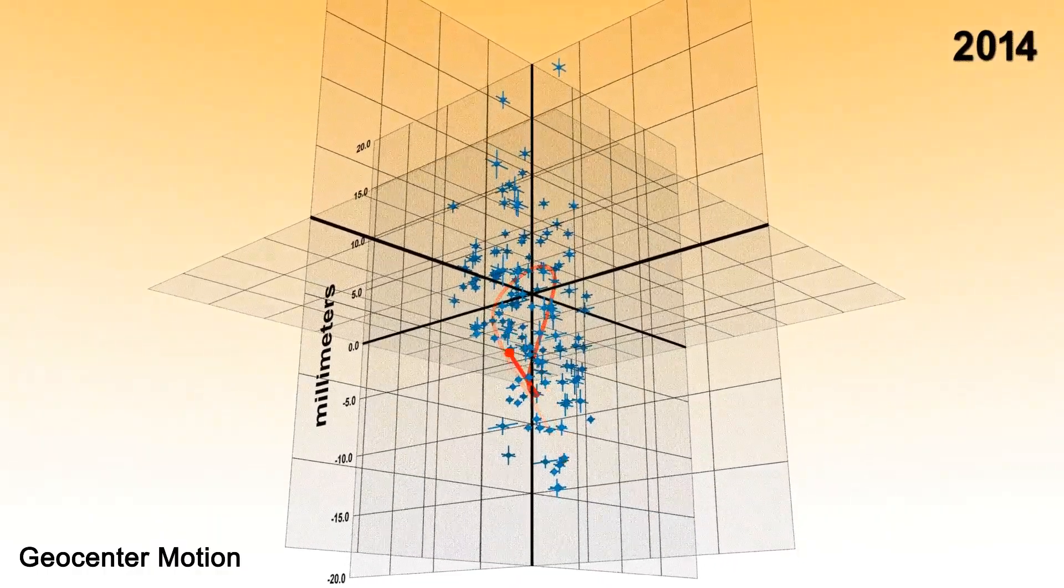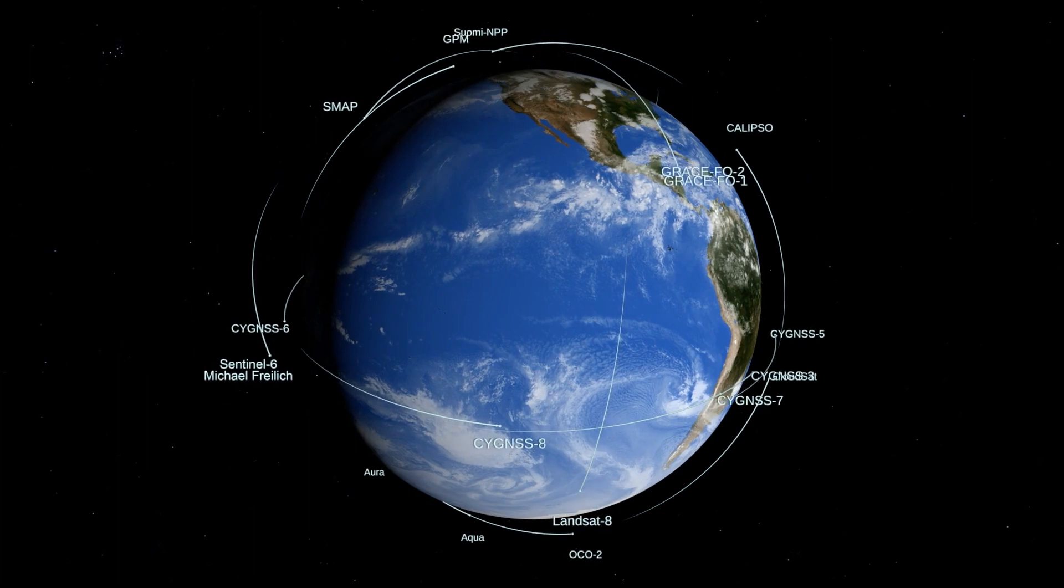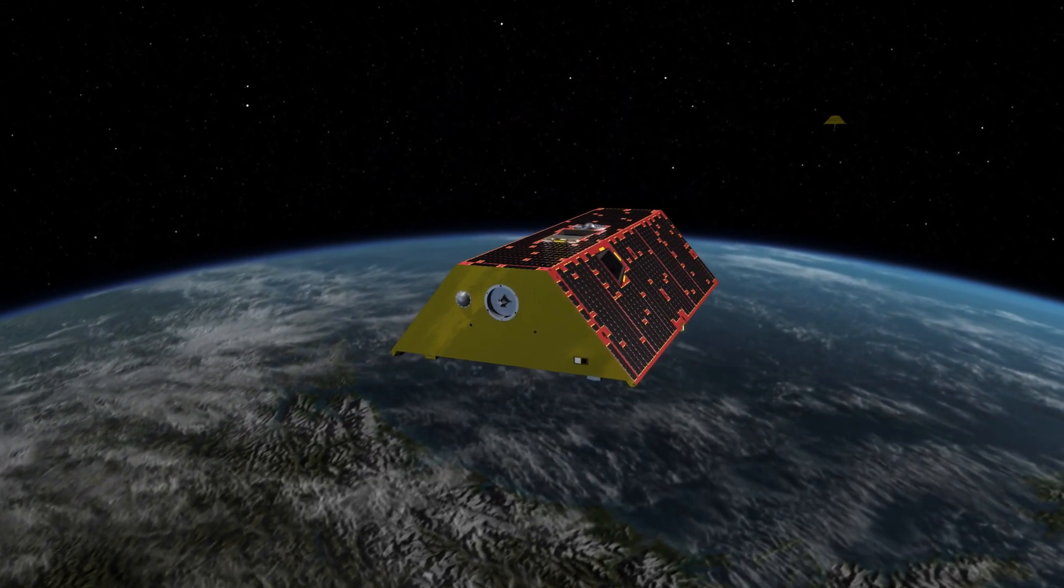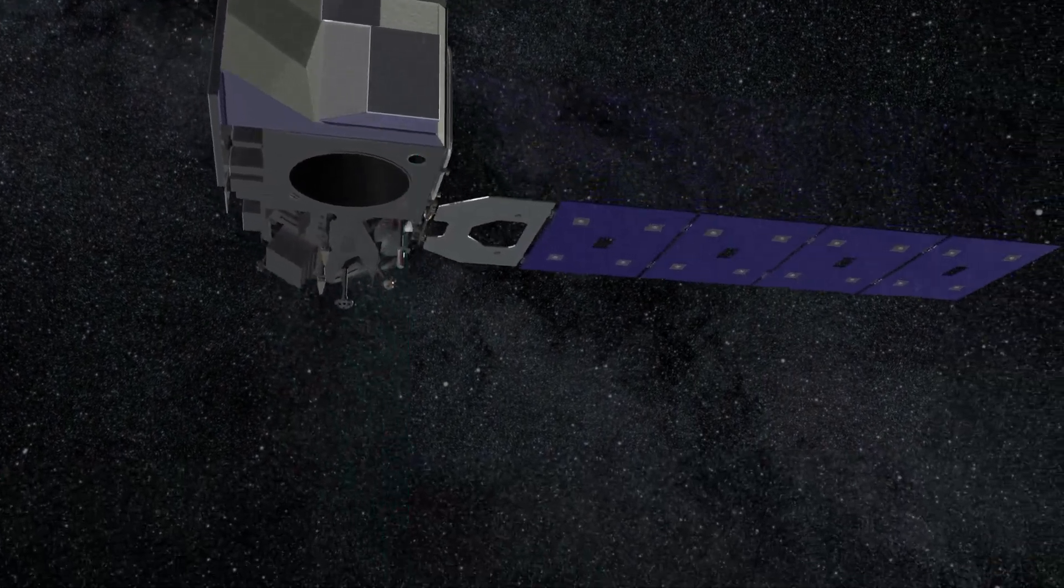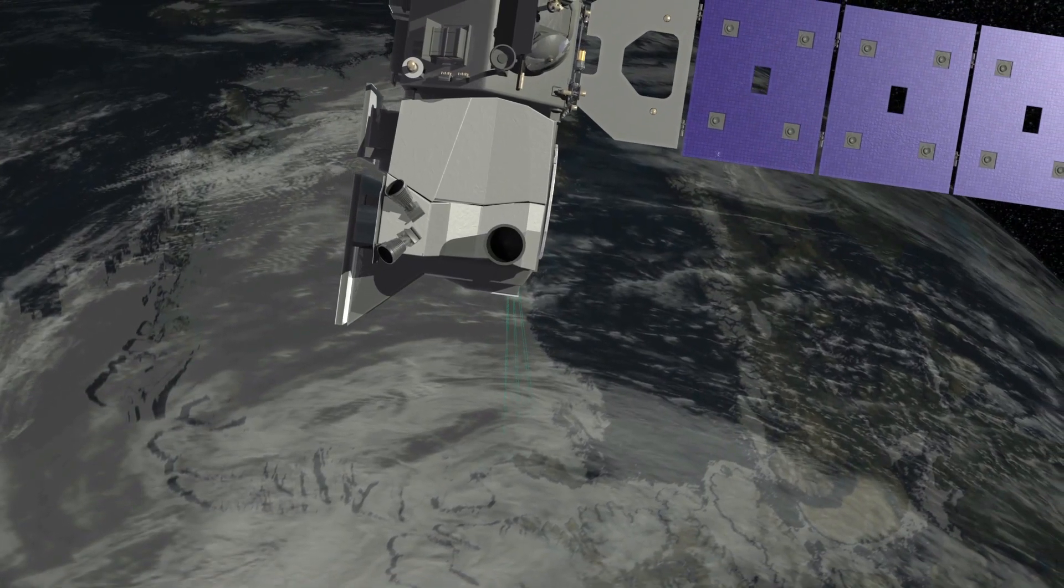This is a very important product that we generate for orbiting satellites, particularly for missions that are either doing mapping the gravitational field of the Earth or mapping the height of the Earth's surface, whether it be land, vegetation, or sea level.